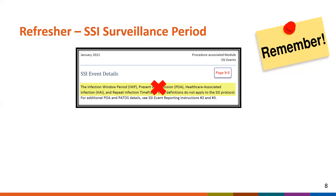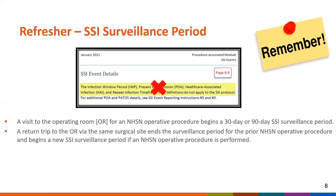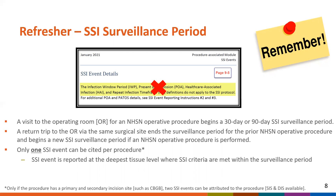Also keep in mind that there is no such thing as ongoing or chronic infection in SSI surveillance. In SSI surveillance, a visit to the OR for an NHSN operative procedure begins a 30-day or 90-day SSI surveillance period. A return trip to the OR via the same surgical site ends the surveillance period for the prior NHSN operative procedure and begins a new SSI surveillance period if an NHSN operative procedure is performed. Only one SSI event can be cited per procedure, and the SSI event must be reported at the deepest tissue level where SSI criteria are met within the surveillance period.